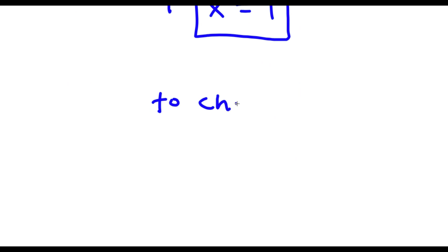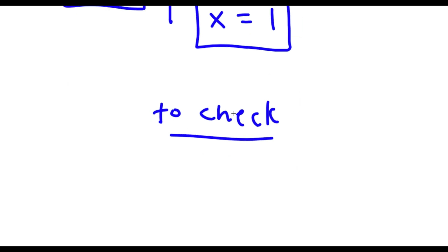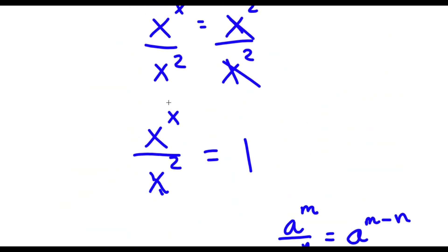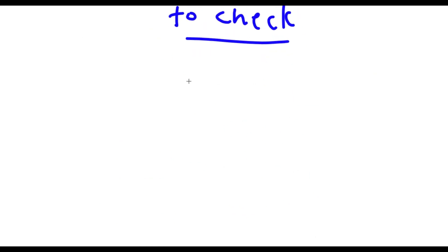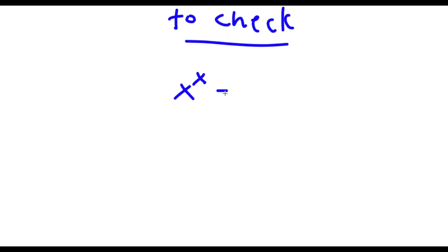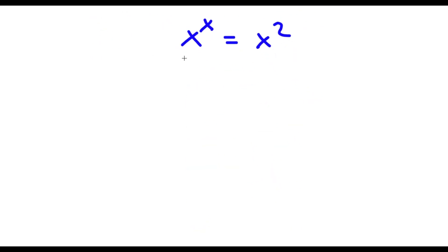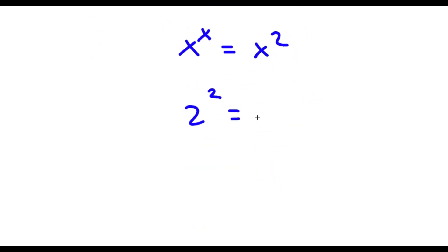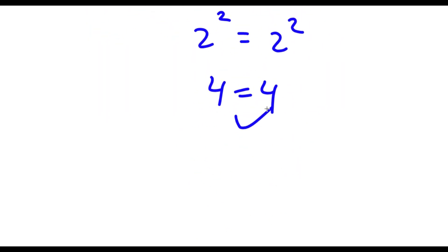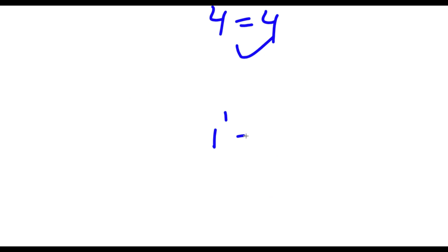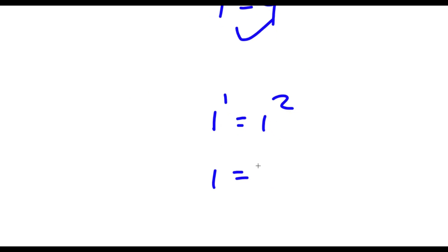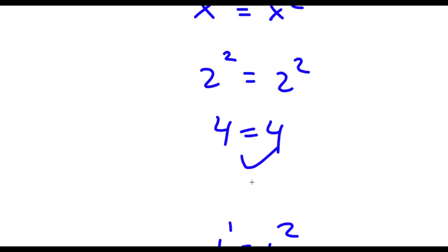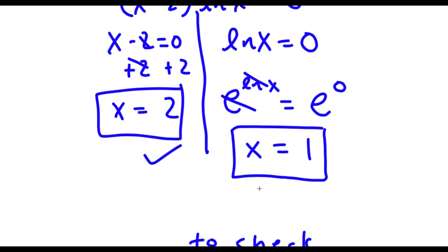Now to check — my equation is x to the power of x equals x to the power of 2. For x equals 2: 2 to the power of 2 equals 2 to the power of 2, which is 4 equals 4. That's correct. For x equals 1: 1 to the power of 1 equals 1 to the power of 2, and 1 equals 1. Both solutions check out.